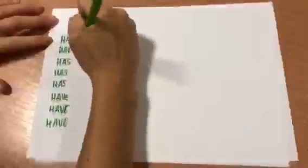To do the questions, we put have with I, you, we, and they, and has with he, she, and it. Then we add the past participle.